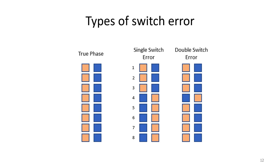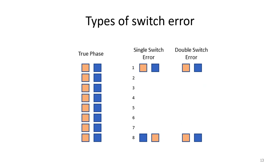In large datasets, double switch errors are the predominant error mode — in sequence data like the UK Biobank, generally over 90% of switch errors are double switch errors. Counterintuitively, double switch errors are preferable to single switch errors. In the double switch error case, any two heterozygous genotypes separated by a double switch error are still correctly phased relative to each other, because the haplotypes switch and then switch back. In the single switch error case, however, the haplotypes get switched and never switch back, so they remain incorrectly phased.